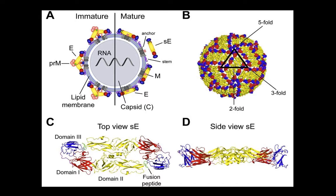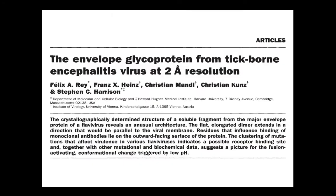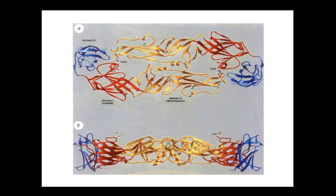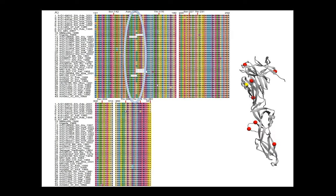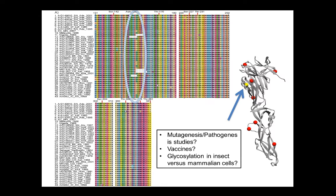A paper from tick-borne encephalitis virus identified a striking conformational change in the envelope protein as well as several pathogenesis motifs — including an aspartate residue that is part of an RGD motif potentially important in extracellular receptor-ligand interactions. It is known from yellow fever that mutagenizing the RGD motif in the major envelope glycoprotein modifies pathogenesis. The African strains of Zika virus have a deletion removing this important N-linked glycosylation site in the envelope glycoprotein, setting the stage for mutagenesis and pathogenesis studies as well as vaccine studies.